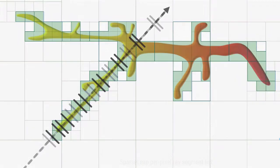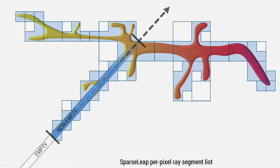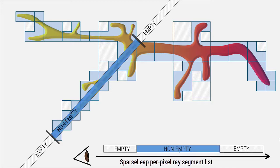In SparseLeap, we rasterize the occupancy geometry into per-pixel linked lists. During rasterization, we merge consecutive intervals that have the same occupancy class. During ray casting, these lists are simply traversed linearly from front to back, allowing the ray caster to skip long segments of empty space in one step.